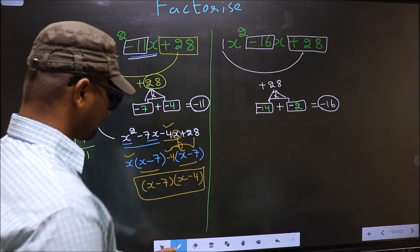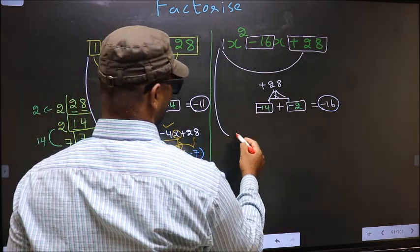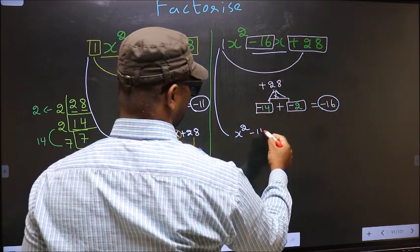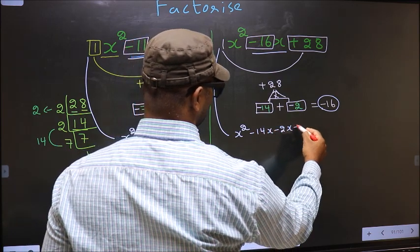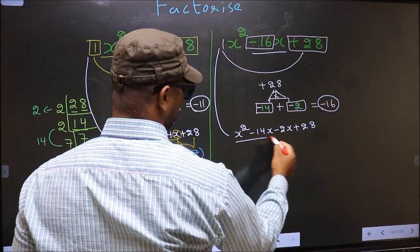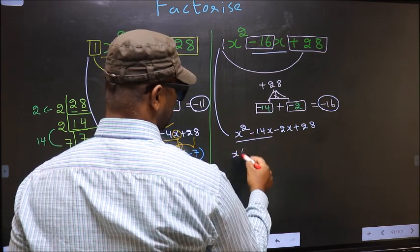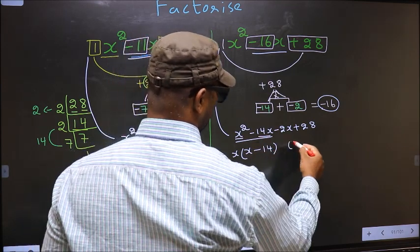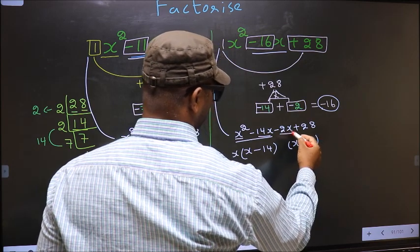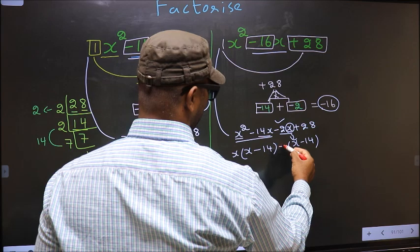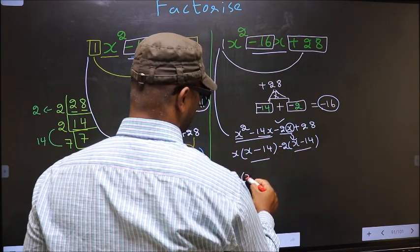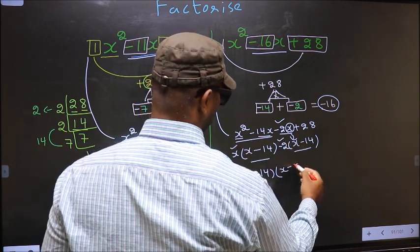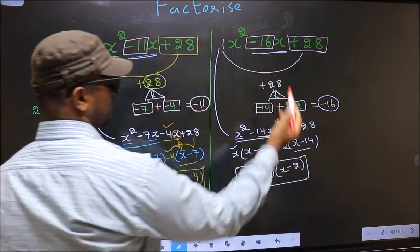Now for the second expression: in place of minus 16x, we write minus 14x minus 2x plus 28. From the first two terms, take out x common: you get x minus 14. From the last two terms, take out minus 2: you also get x minus 14. Now take out x minus 14 as a common factor, giving x minus 14 times x minus 2. This is the answer for the second expression.